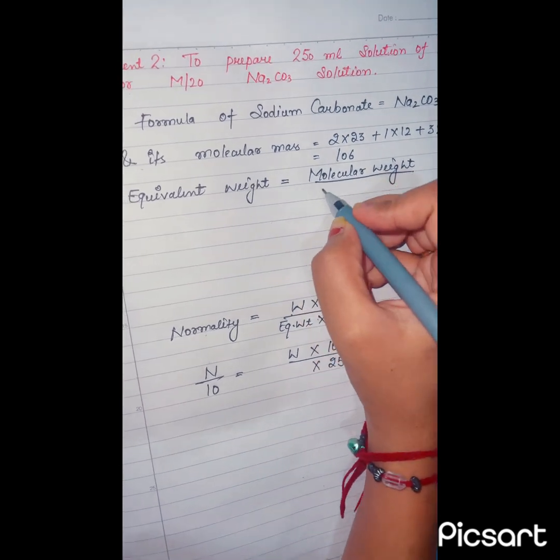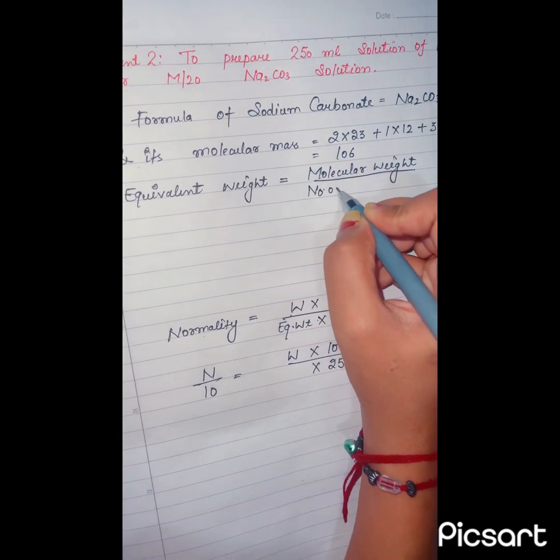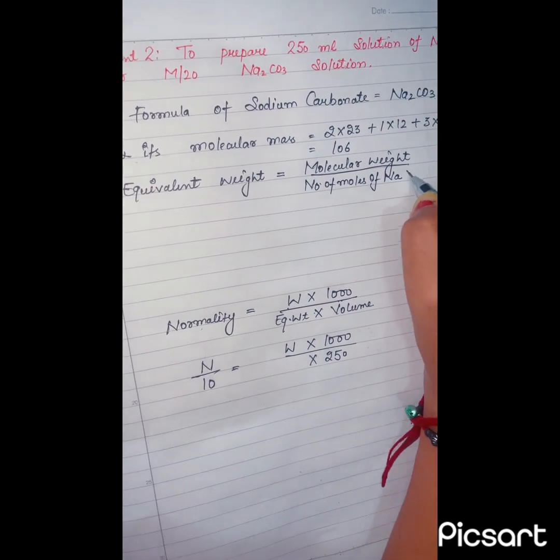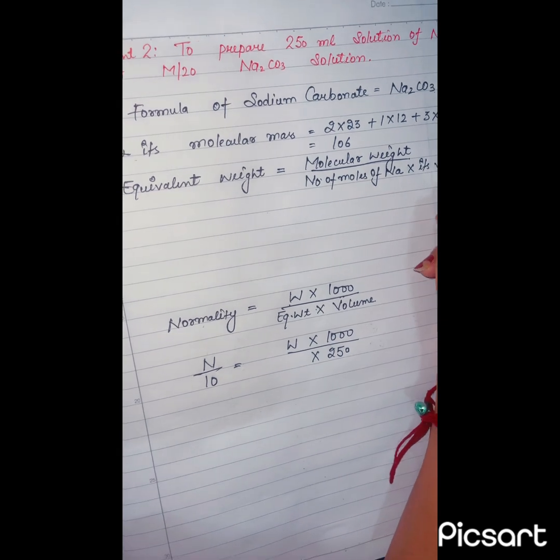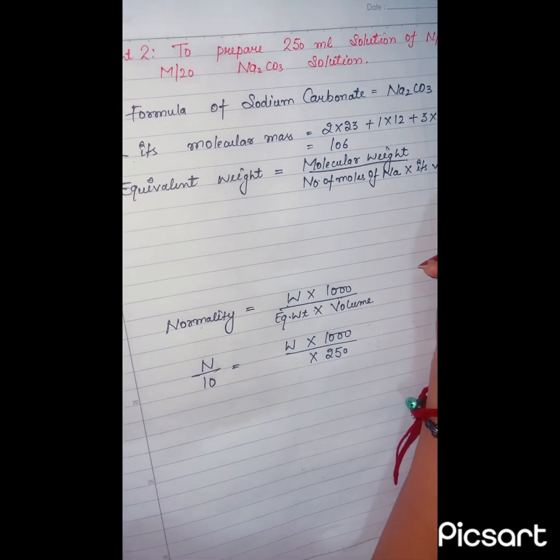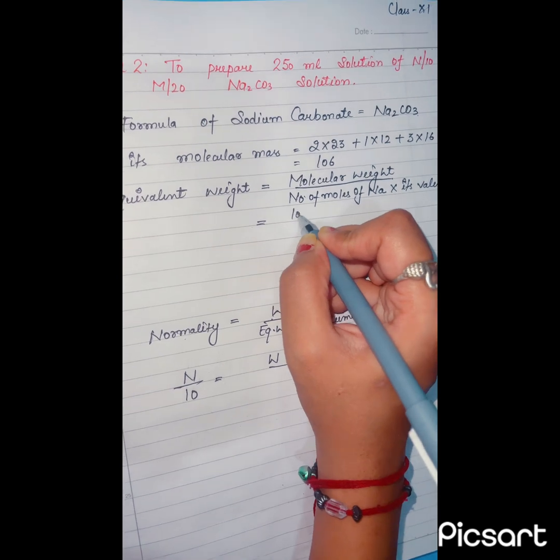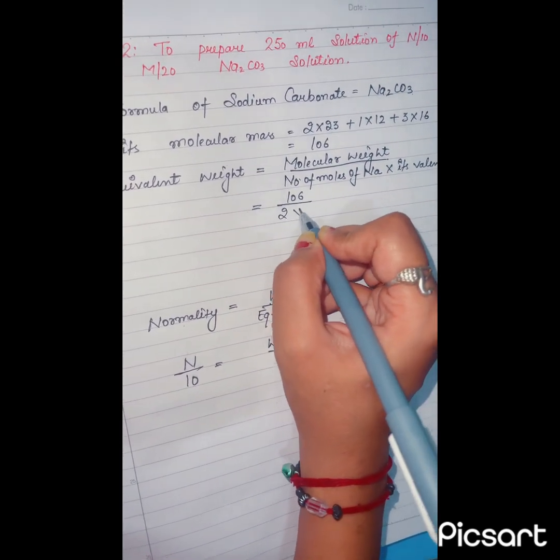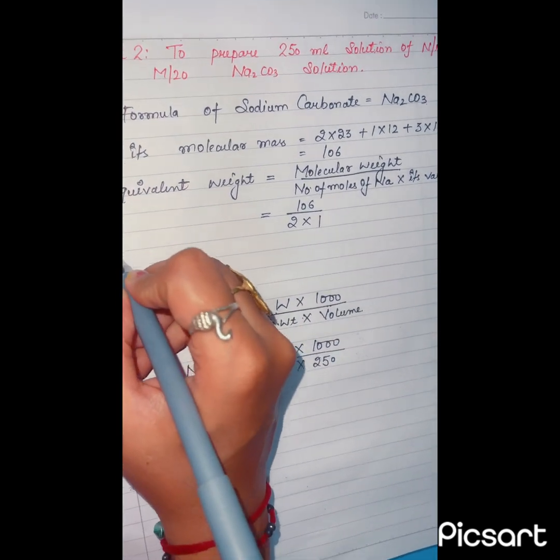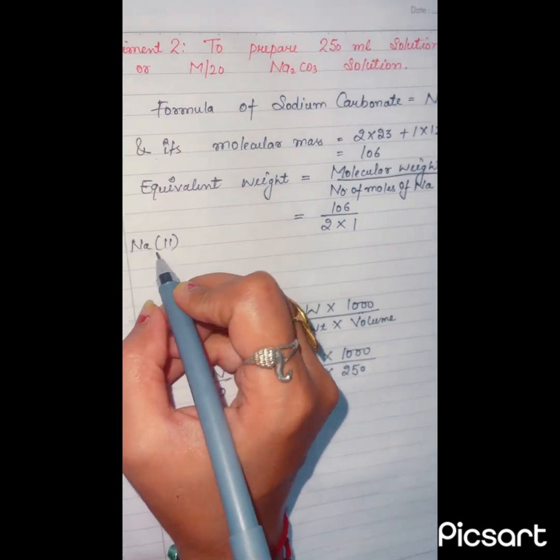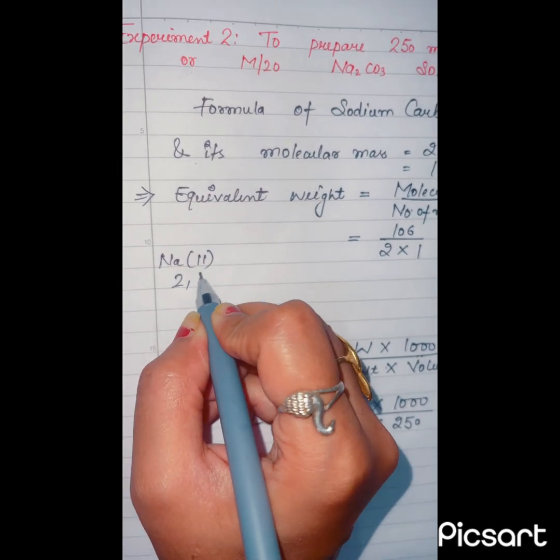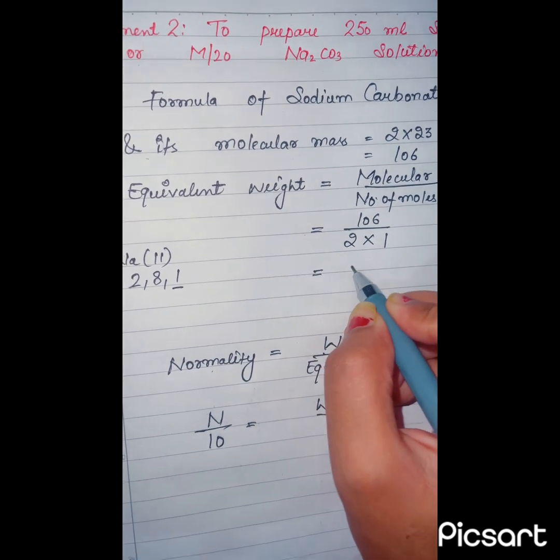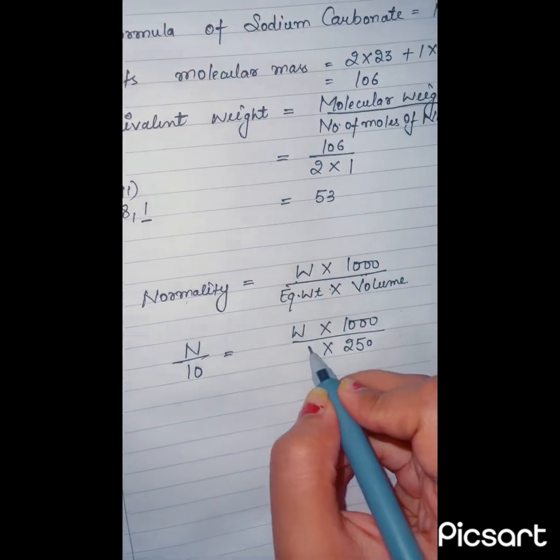Molecular weight is 106, number of moles of sodium is 2, valency is 1. You know sodium is 11. That is 2 times 1, so one is the valency. That is 106 divided by 2, which is 53.